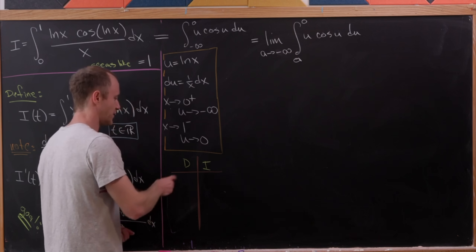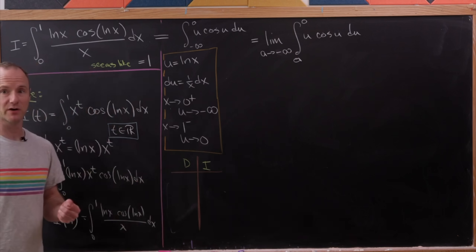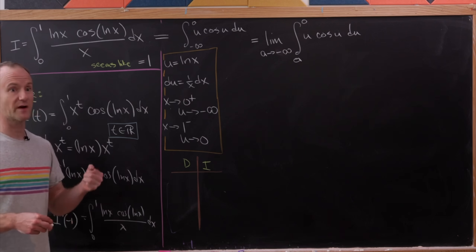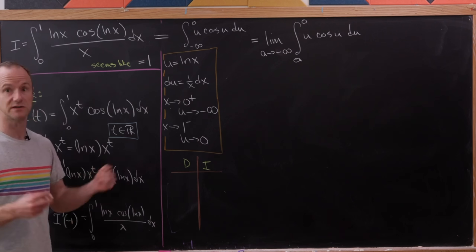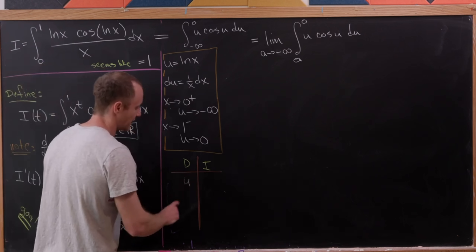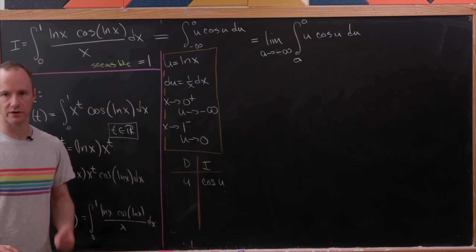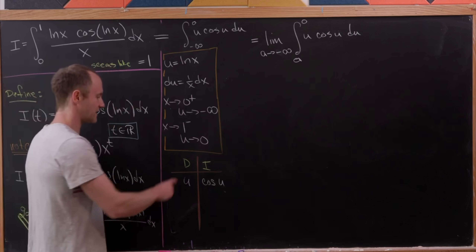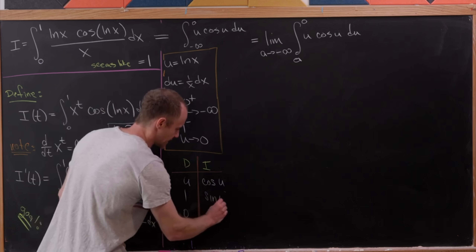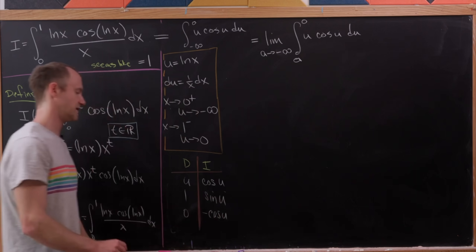We put the function that simplifies under differentiation on the left: that's u. We put cosine u in the antiderivative column. Taking derivatives down gives us 1 and then 0; antiderivatives give us sine u and then minus cosine u.